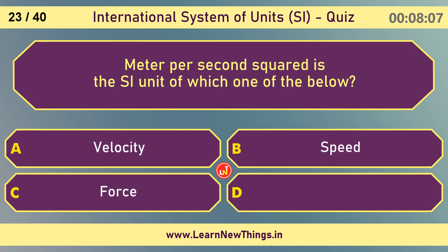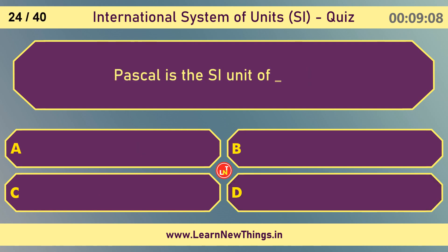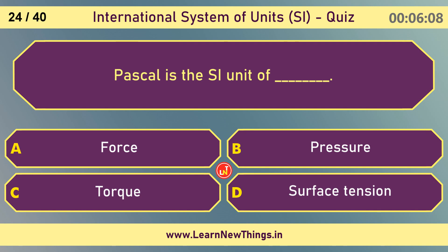Meter per second squared is the SI unit of which one of the below? Acceleration. Pascal is the SI unit of pressure.